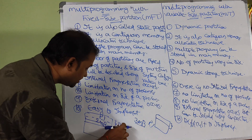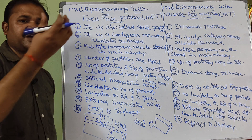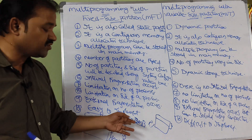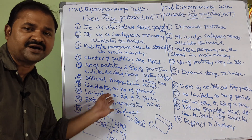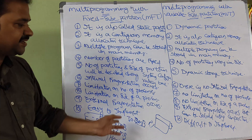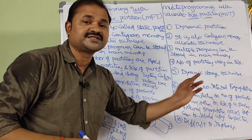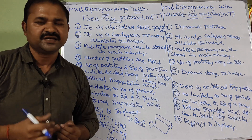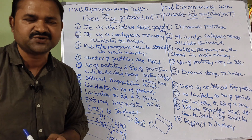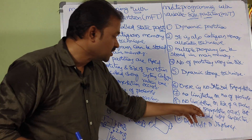The eighth point: MFT has a limitation on the size of a process. For example, if partitions are 5 MB, 2 MB, and 100 MB, a process of 500 MB cannot be stored in any partition — so large processes cannot be accommodated. In MVT there is no limitation on process size: if a process is 500 MB and the main memory permits, the operating system can allocate 500 MB for that process without any problem.